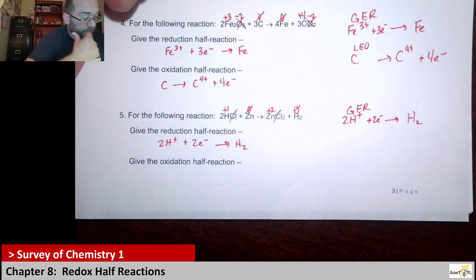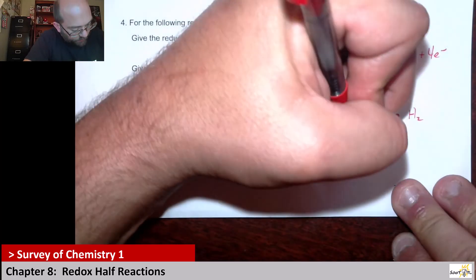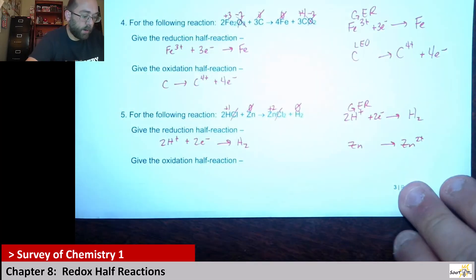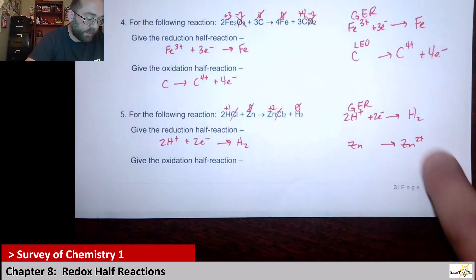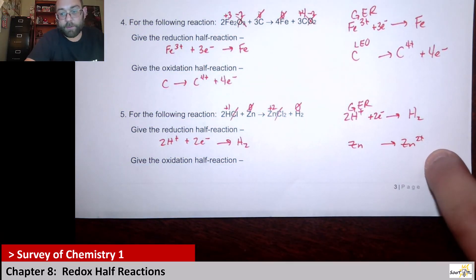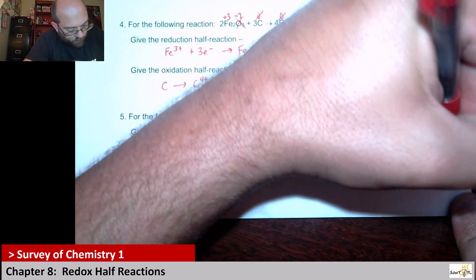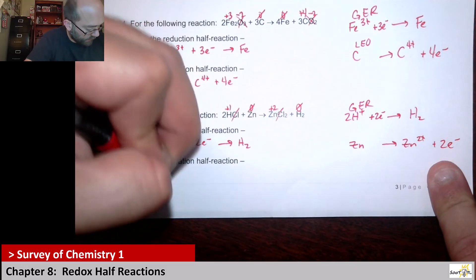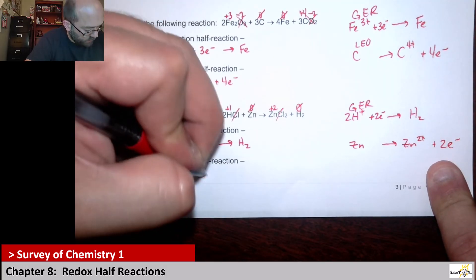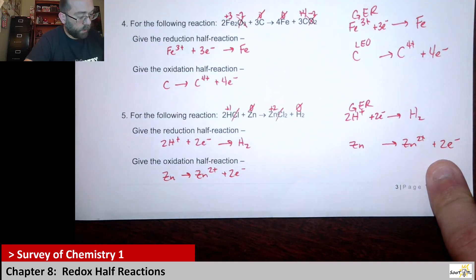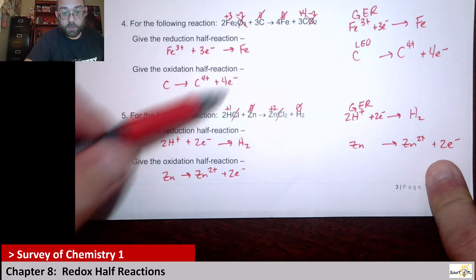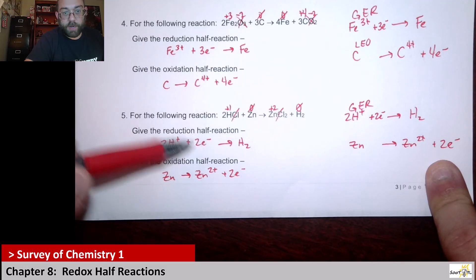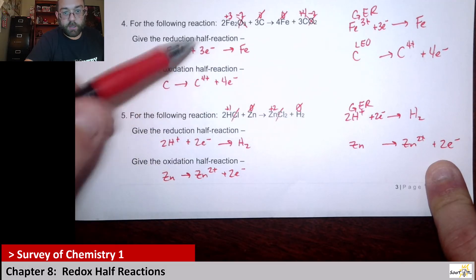That means zinc has to be oxidation. So I have zinc zero going to zinc two plus. I have zero on the reactant side and a plus charge on the product side, so I put the electrons on the product side. That gives zero on both sides. So that's my oxidation half reaction. Oxidation has electrons on the product; reduction has electrons on the reactant side.